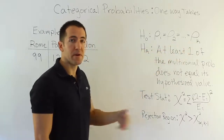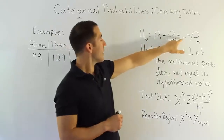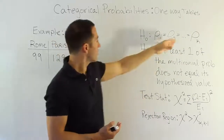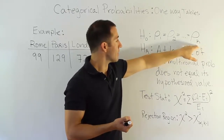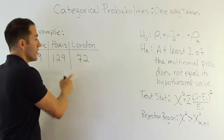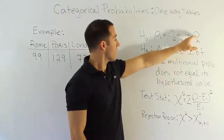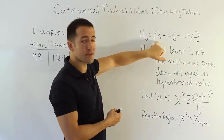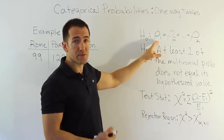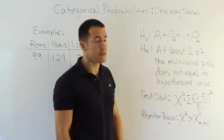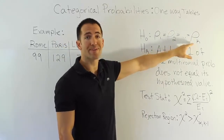The hypothesis is about a proportion or probability. It's saying the proportion for the first city is equal to the proportion for the second city. In our case with three cities — Rome, Paris, and London — we let K equal the number of categories, so K equals 3. The null hypothesis states the proportion wanting to go to Rome equals the proportion wanting to go to Paris equals the proportion wanting to go to London.